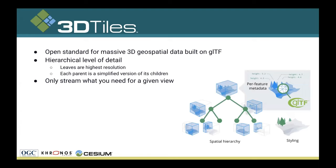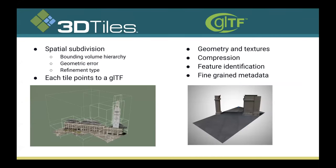3D tiles attempts to solve these problems — at least the massive scale problem and some metadata problems. It's an open standard for massive 3D geospatial datasets, built on GLTF, expressing hierarchical level of detail. Leaves are at the highest resolution, and each parent is a simplified version of its children, allowing you to stream only what you need for a given view. 3D tiles is a JSON format specifying the bounding volume hierarchy, geometric error, and refinement type, creating a tree of tiles where each tile points to a GLTF containing geometry, textures, compression, feature identification, and metadata.